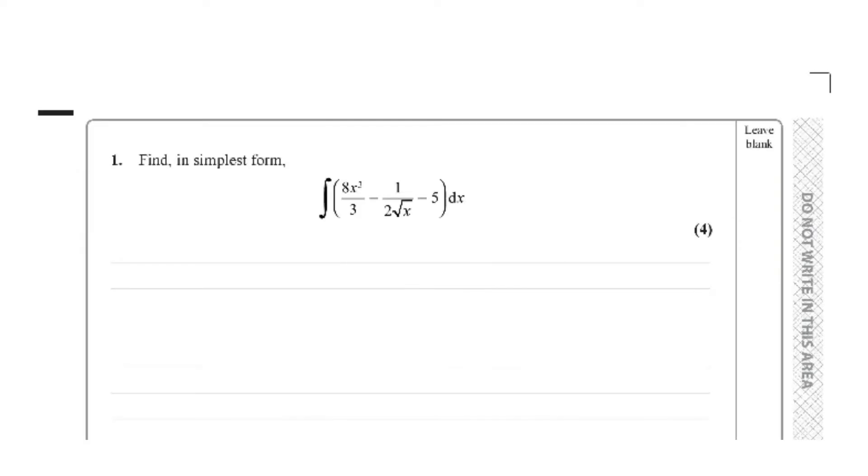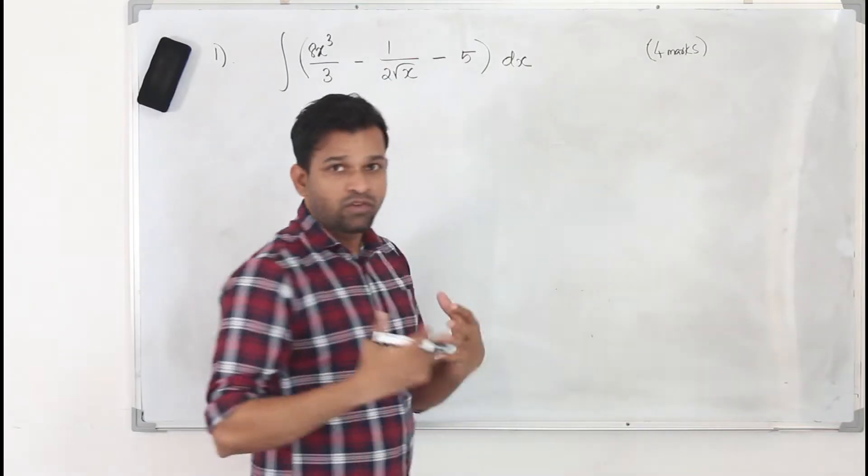Question number 1. Integral 8x³/3 minus 1/(2√x) minus 5 dx. This question has four marks.